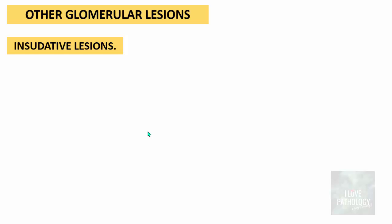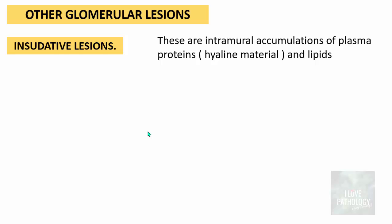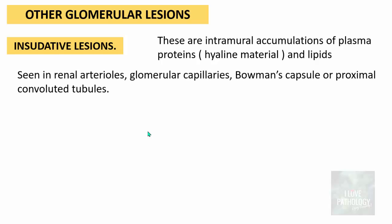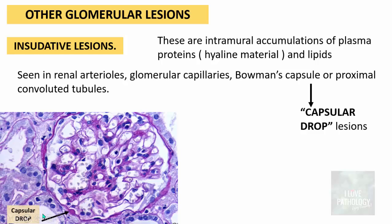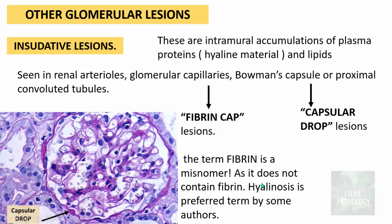Other glomerular lesions are called exudative or insudative lesions — intramural accumulations of plasma proteins, hyaline material, and lipids seen in arterioles, renal arterioles, glomerular capillaries, Bowman's capsule, or proximal convoluted tubules. When seen on the Bowman's capsule, they are called capsular drop lesions — hyaline material appearing to drop from the Bowman's capsule. Lesions in the glomerular capillaries are known as fibrin cap lesions, though 'fibrin' is a misnomer as they do not actually contain fibrin; 'hyalinosis' is a preferred term.